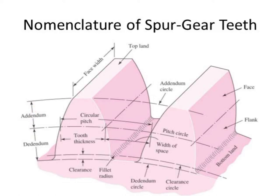Since tooth thickness varies along the tooth profile, we measure tooth thickness on the pitch circle. That distance, measured on the pitch circle, is called tooth thickness. The distance from the end of one tooth to the start of the next tooth, also measured on the pitch circle, is called the width of space.